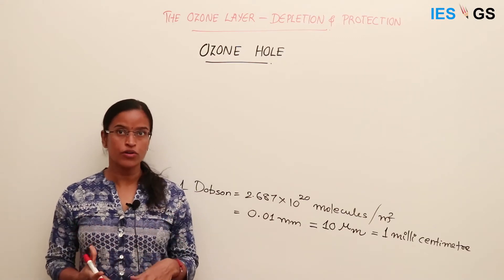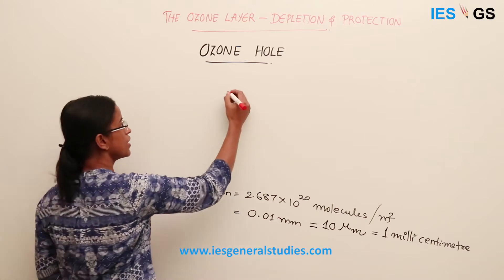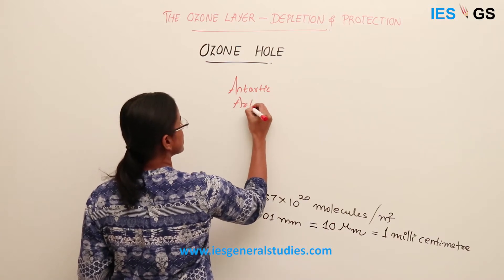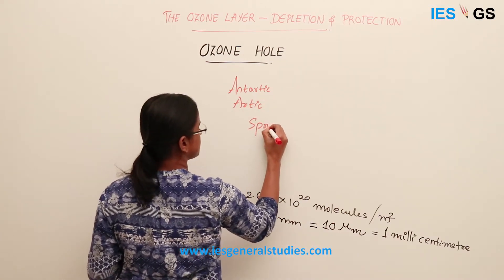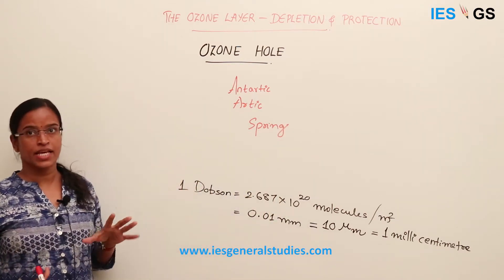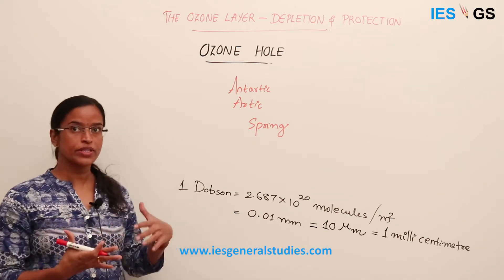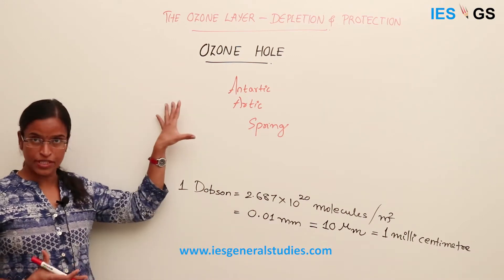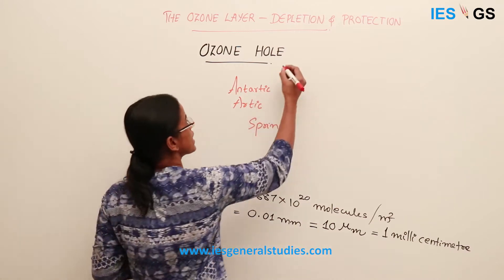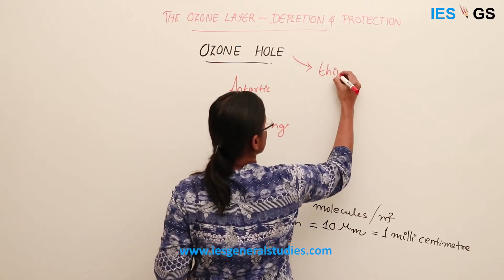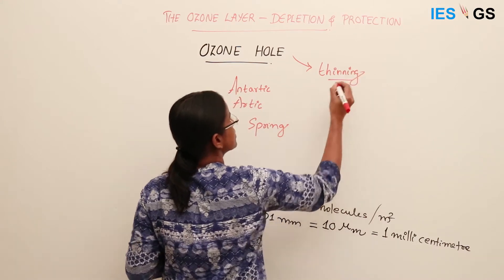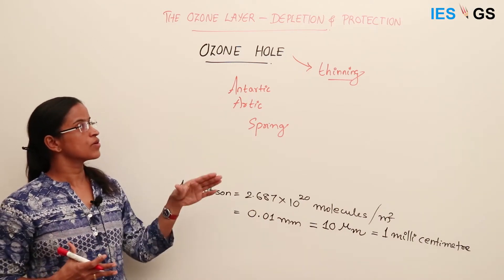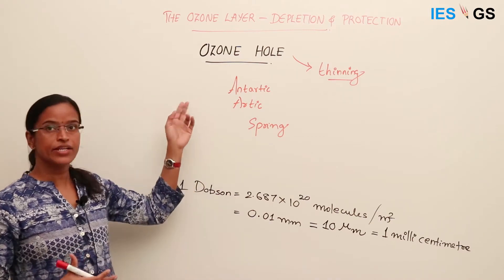We usually hear about ozone hole formation over polar regions, especially over the Antarctic and sometimes over Arctic regions during spring season. What does this ozone hole mean — is it actually a hole formed in the ozone layer? This ozone hole essentially means thinning of the ozone layer. We have a standard thickness that ozone should be in the stratosphere, and when the thickness goes below a particular level, we say that an ozone hole has formed.